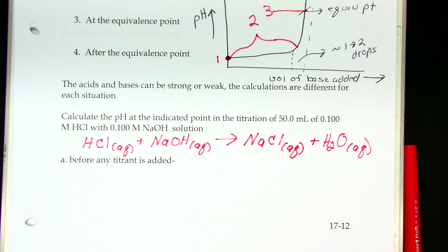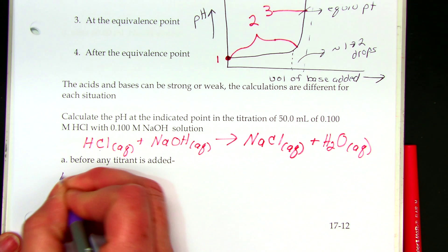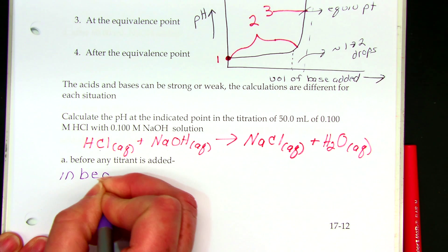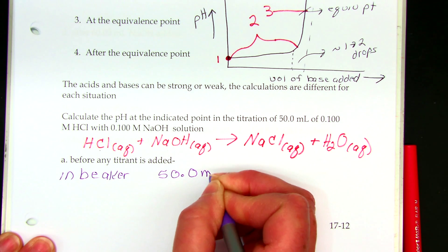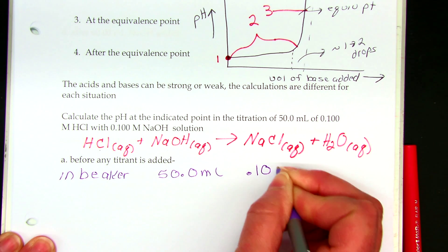So now let's go through this stepwise. We're going to look at each of those zones. So the first zone is before any titrant is added. So what's in my beaker at this point in time, I have 50 milliliters of 0.1 molar HCl.